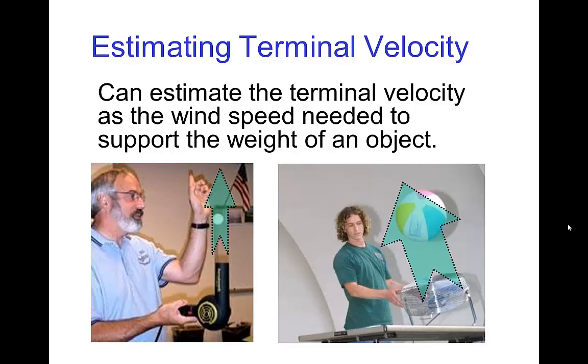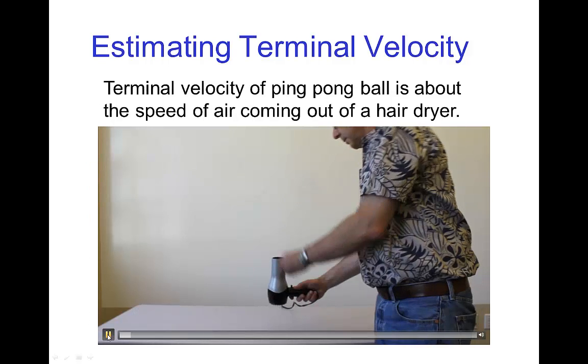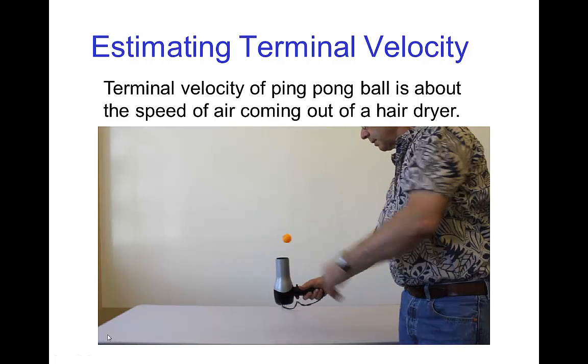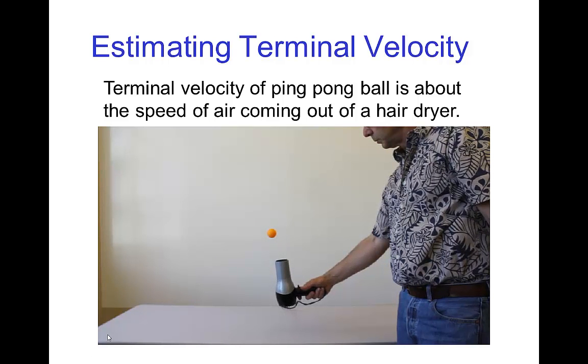Now, you can estimate the terminal velocity for an object if you can estimate the wind speed that would be needed to support it. So here's a little example with a ping pong ball. You see that the hairdryer is blowing at a speed, airspeed that is fast enough that it is supporting the ping pong ball. And so that means that the ping pong ball has a terminal velocity roughly equal to that airspeed.